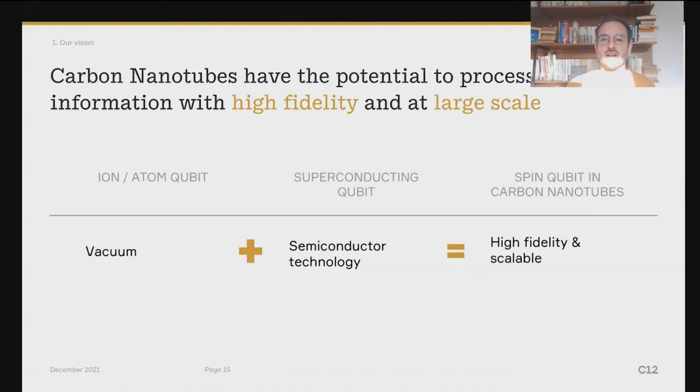So to sum up, carbon nanotubes have the potential to process quantum information with high fidelity and at large scale. We really like combining the best of both worlds. So like superconducting qubits, we are semiconductor technology. And this is what is great about them, but they are limited by coherence time. What is great about ion or atom qubits is that they lie in vacuum enabling high fidelity, but they have fundamental challenges to increase the number of qubits above a couple of hundreds. With spin qubits in carbon nanotubes, we really have this vacuum feature, but on a chip.